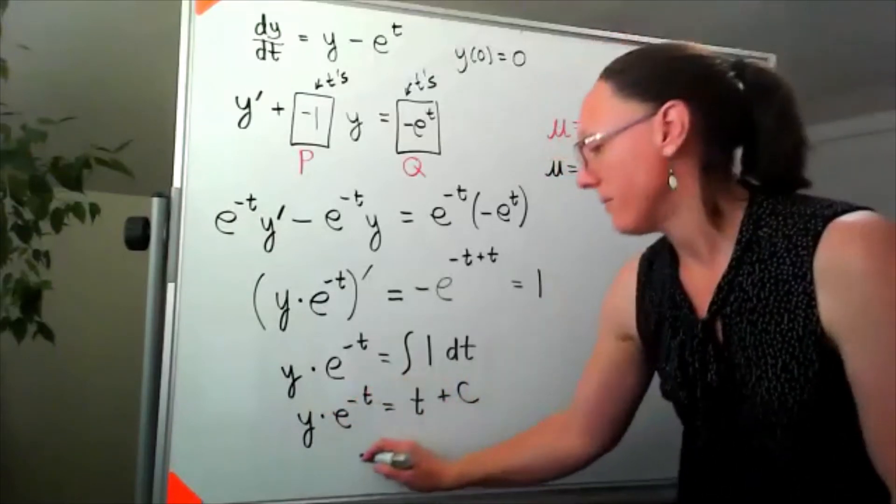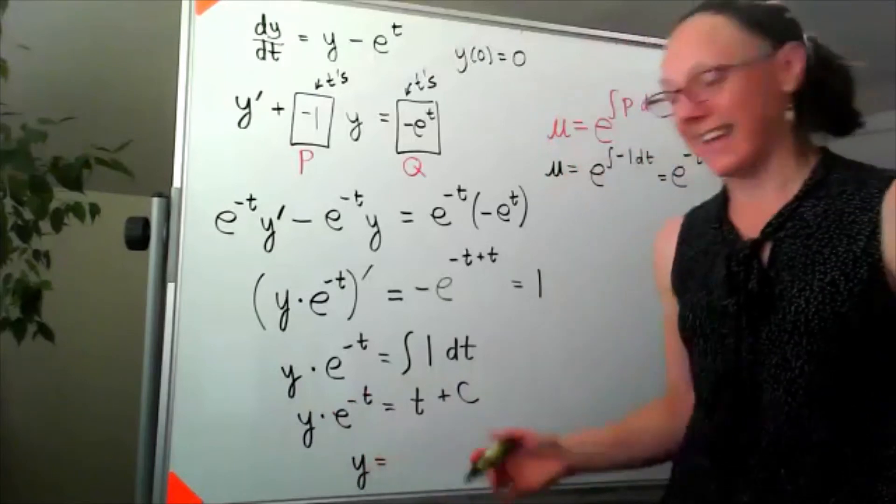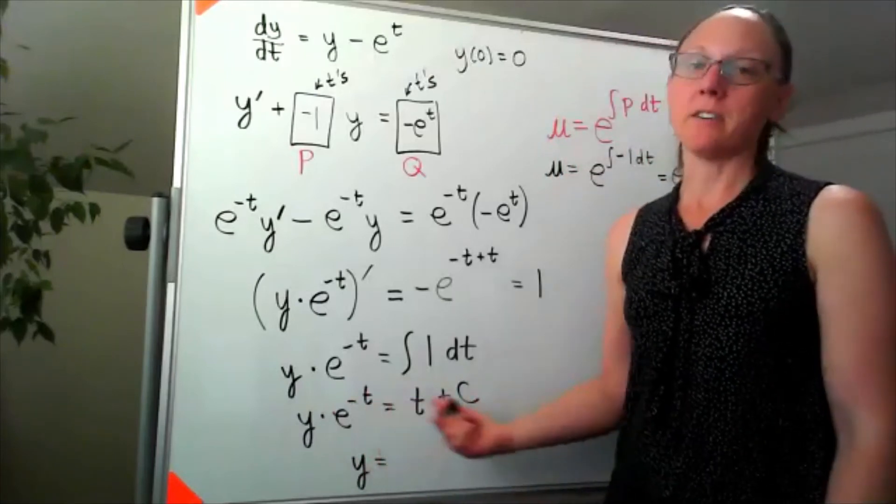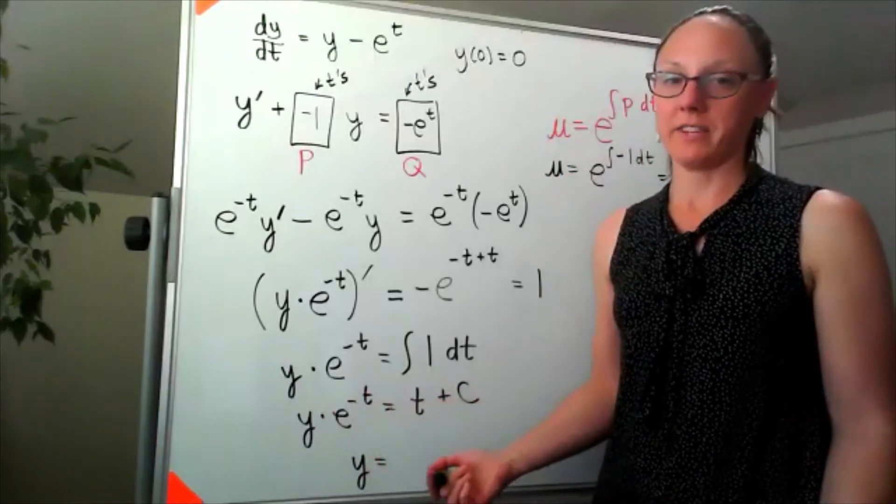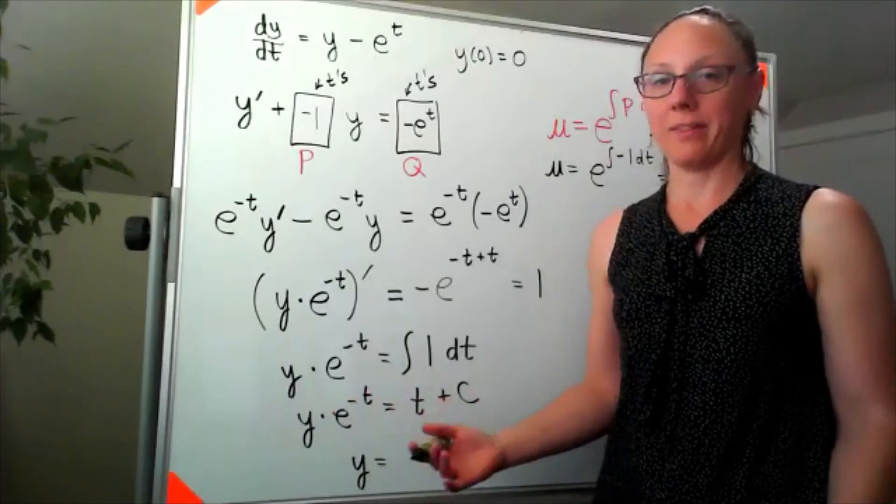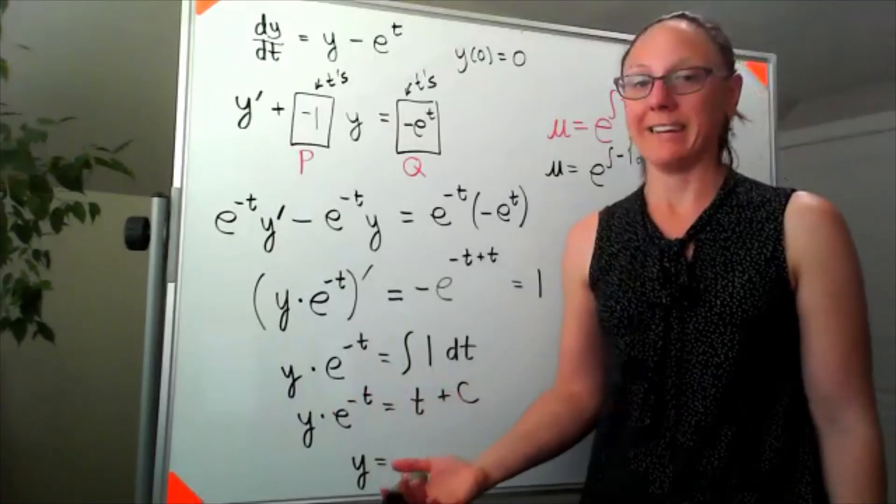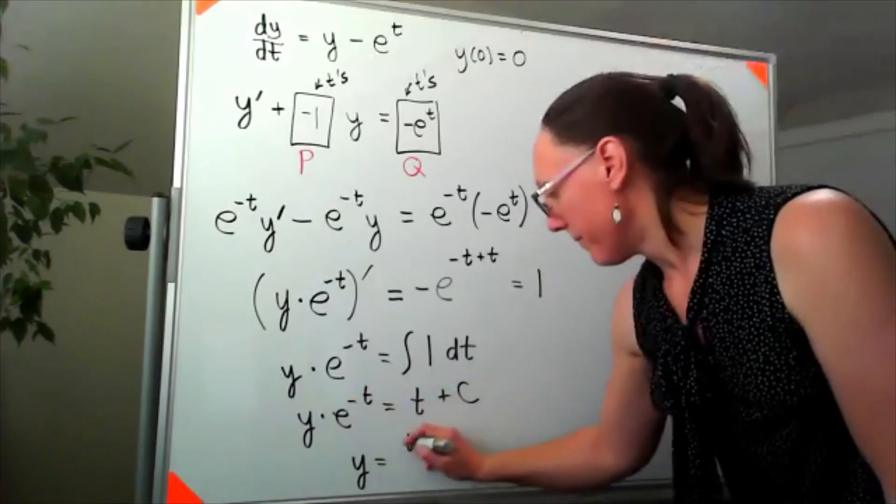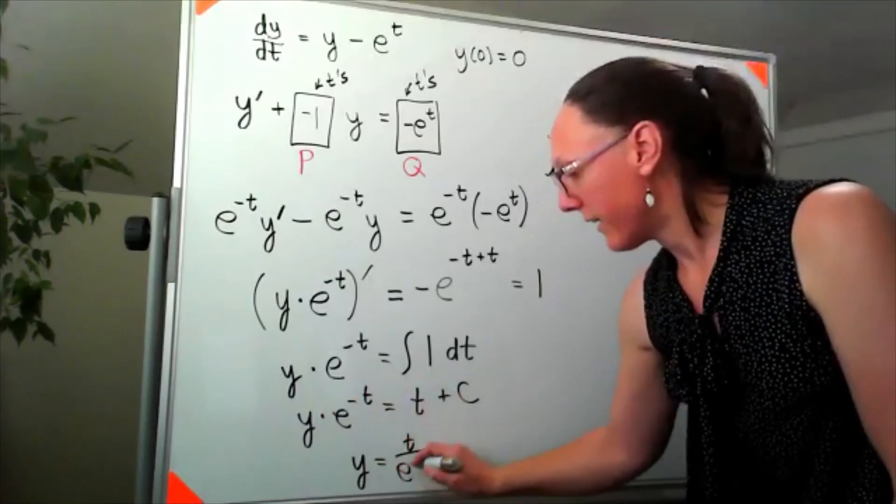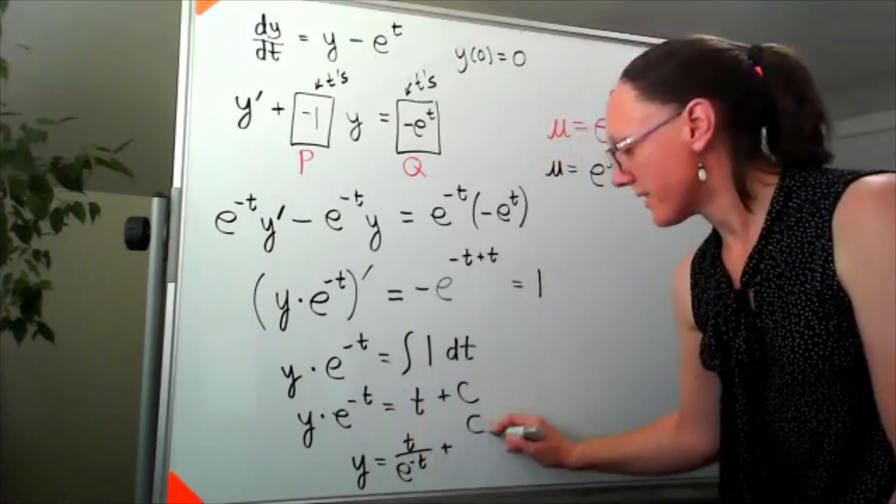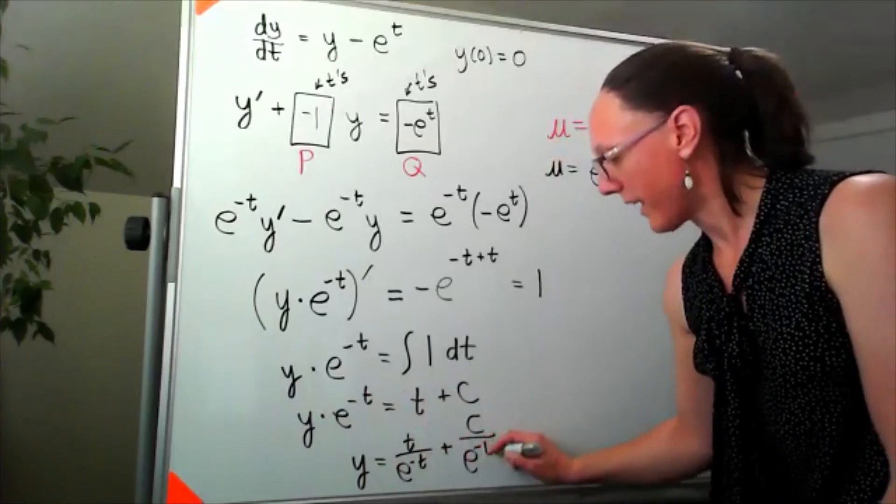And over here on the left hand side, I've got y times e to the negative t. So to finish solving this, I need to make this say y equals. So I'm going to divide both sides by e to the negative t, or you could think about that as multiplying both sides by e to the t. So I'd have t over e to the negative t plus c over e to the negative t.